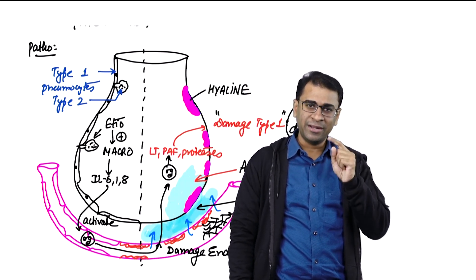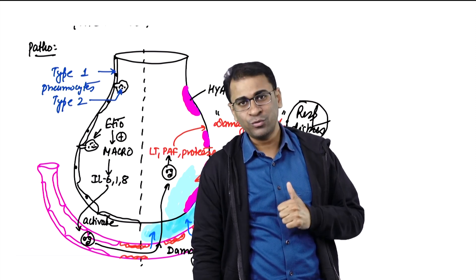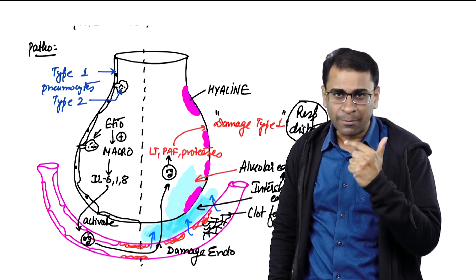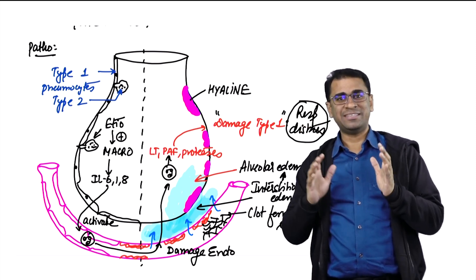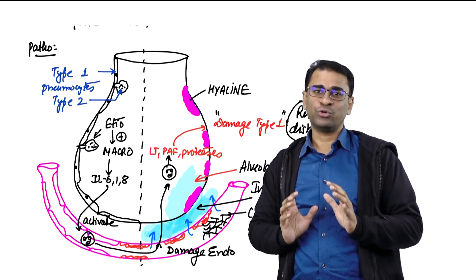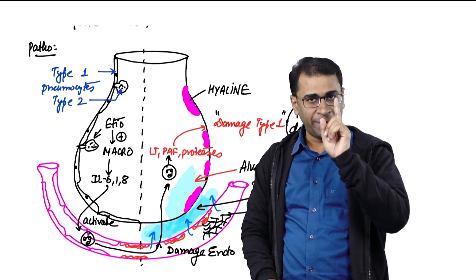Now you tell me, what all will you expect in the EM image of ARDS? Won't you expect destroyed type 1 cells? Yes, you would. Won't you expect increased number of type 2 pneumocytes? Yes, you would. And won't you expect this pink area of hyaline? Obviously the EM will not show you pink image but it will show you something depositing there. Based on this knowledge, let's move to the actual slide.